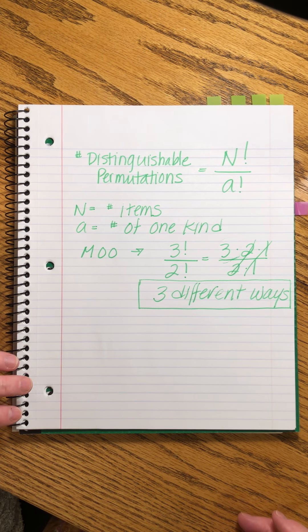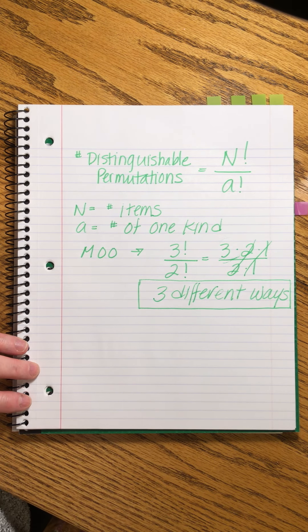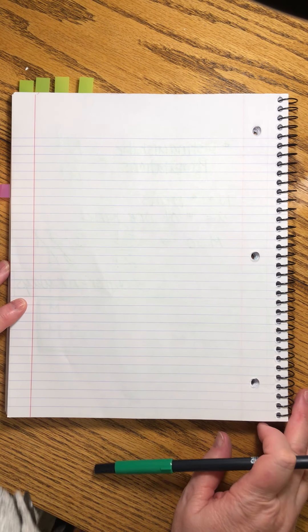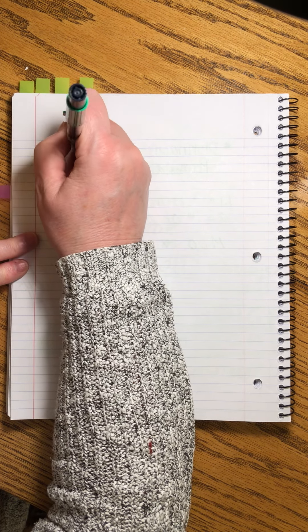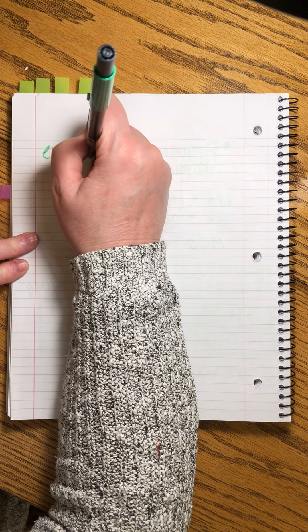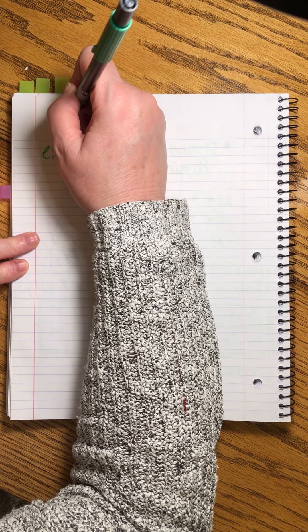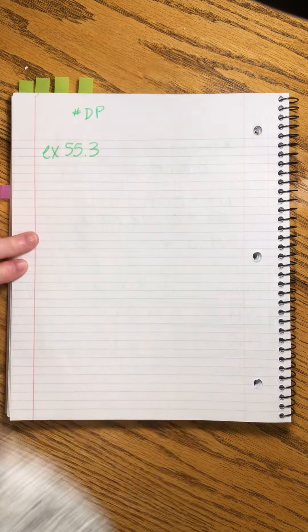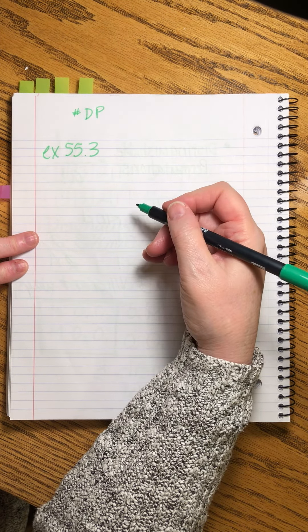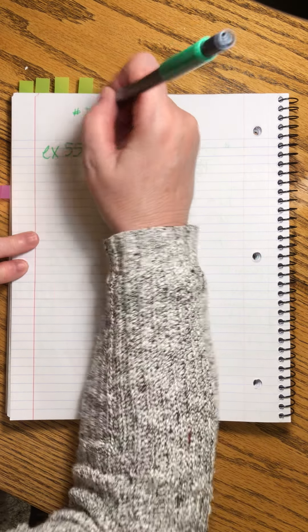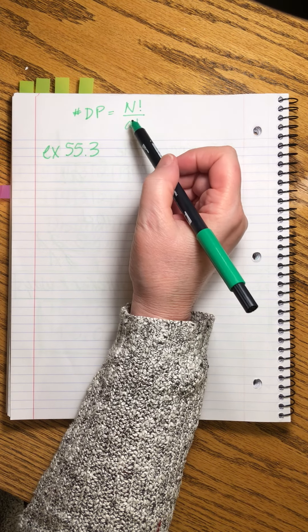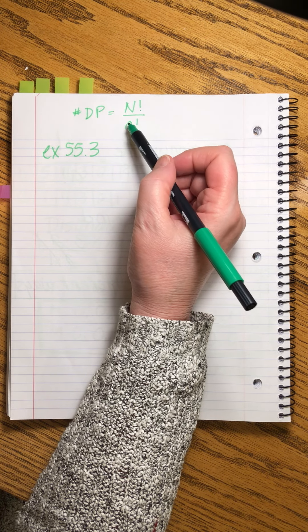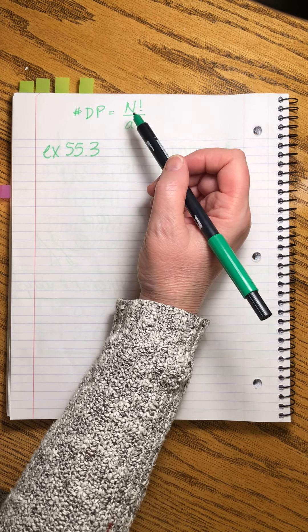Let's try another one. This one's kind of long so I'm going to go to another page. Example 55.3. I'll write the formula up here: number of distinguishable permutations equals n factorial over a factorial — this is the number of items, and this is the ones that repeat, like we put two here for the two O's.